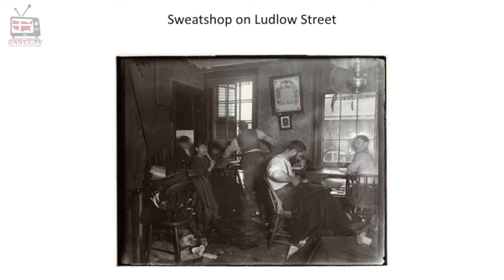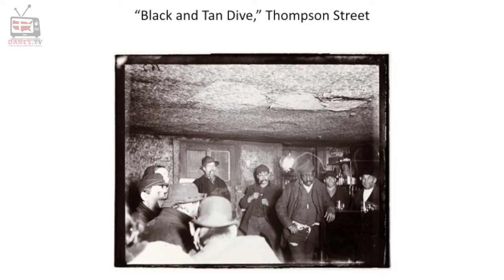One example is a picture of a sweatshop on Ludlow Street in what was called 'Jewtown,' a neighborhood around Hester, Ludlow, and Orchard Streets. Another example is a picture of what was called the 'black and tan dive,' where the races mixed, which Riis frowned upon as being worse than regular dives. You can see these are cellar rooms where people often had no place to sleep and would stay there all night.